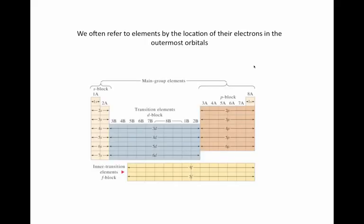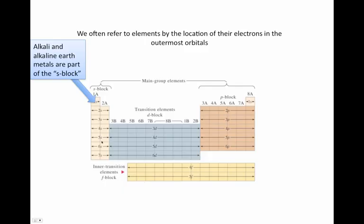In fact, we often refer to elements by the location of the electrons in their outermost orbitals. So for example, the alkali and alkaline earth metals are part of the s-block. Their outermost electrons are in s orbitals and this, as we'll see, is what gives them such similar chemistry.